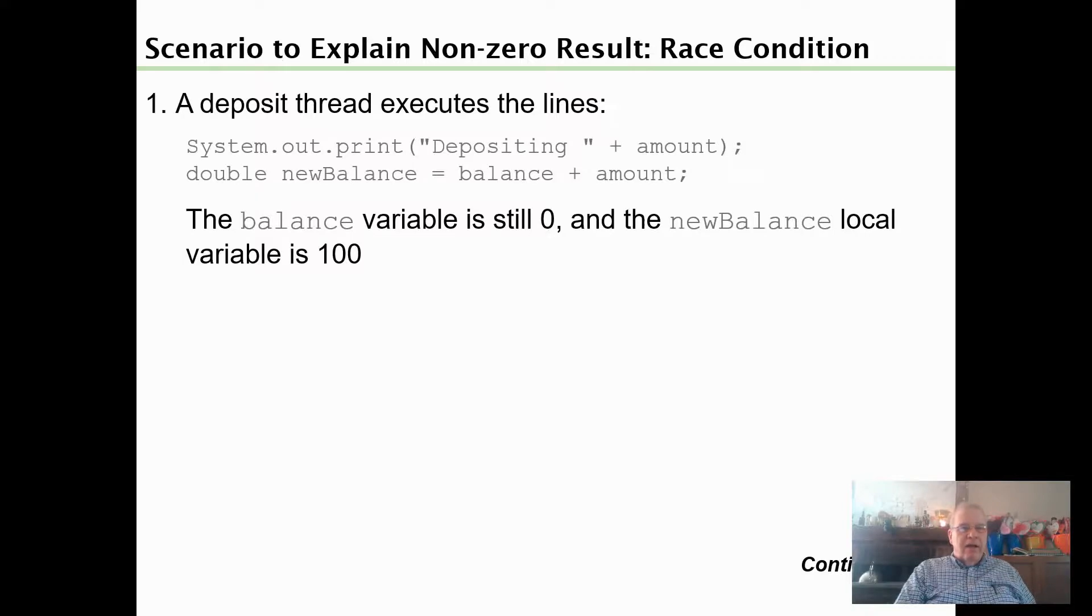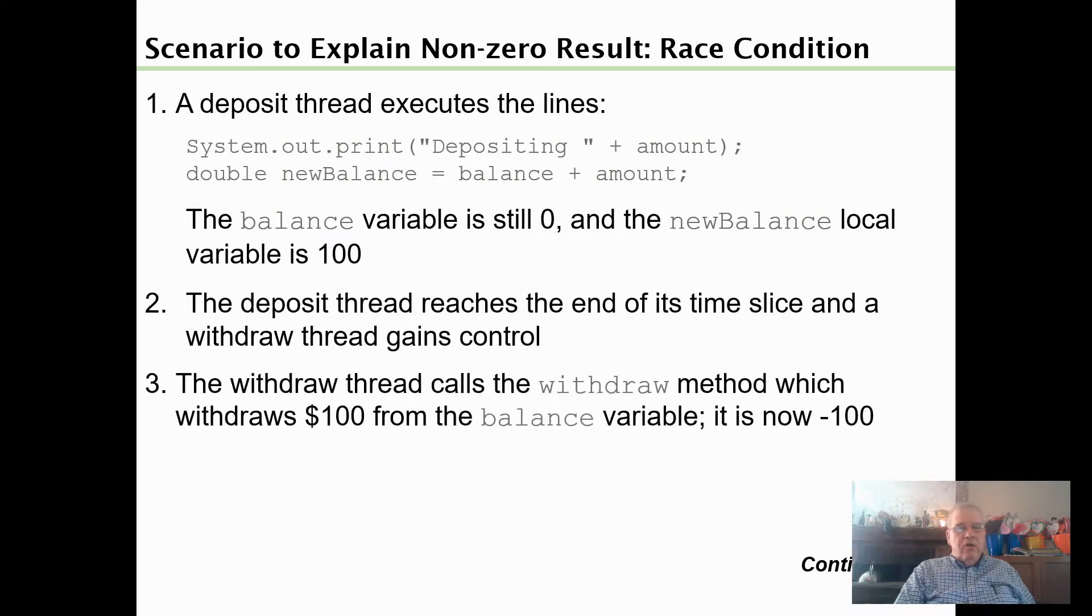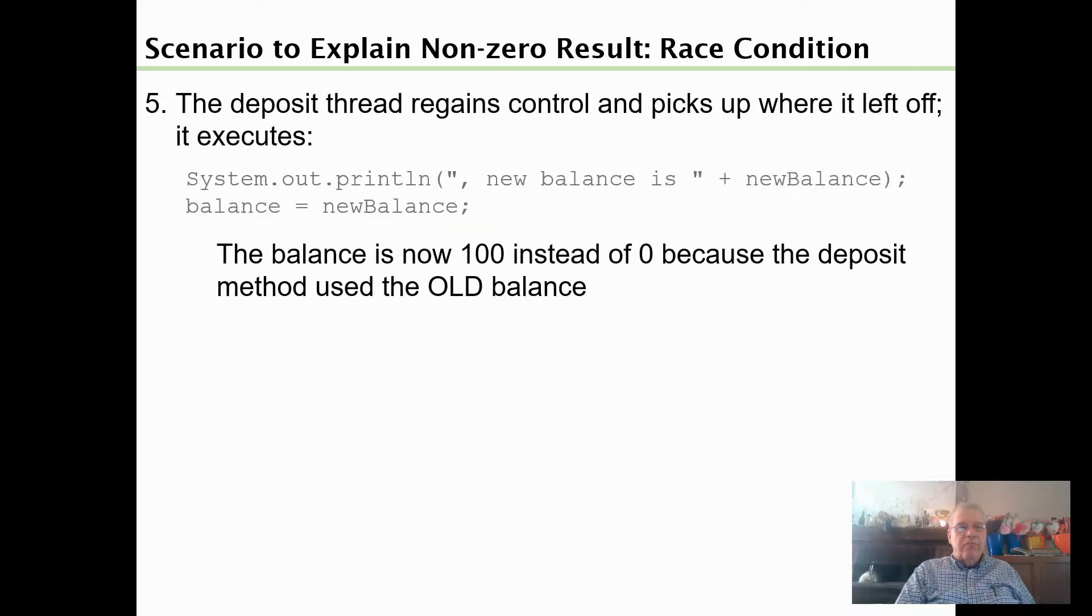In this example, the deposit thread starts executing depositing an amount, and the balance variable is still zero when new balance gets set to the amount, which is a hundred. But then the deposit thread reaches the end of its time slice and the withdraw thread gains control. The withdraw thread withdraws a hundred dollars from the balance variable which is still zero, so now it's negative a hundred dollars. Not good. Then the withdrawal thread goes to sleep. So the deposit thread picks up where it left off, and the balance is now a hundred instead of zero because the deposit method used the old balance.